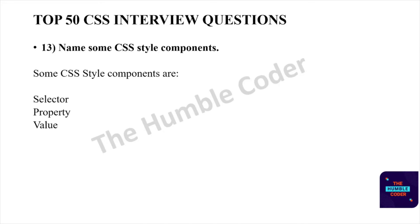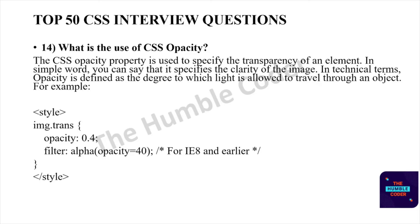What is the use of CSS opacity? The CSS opacity property is used to specify the transparency of an element. In simple terms, it specifies the clarity of the image. In technical terms, opacity is defined as a degree to which light is allowed to travel through an object. For example, for image.trans you can set opacity to 0.4. You can see the syntax or code snippet below.